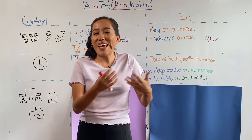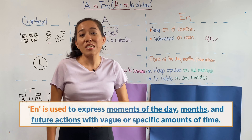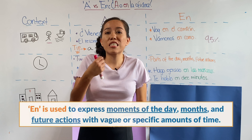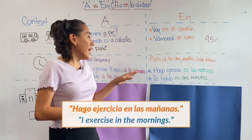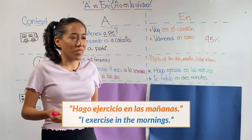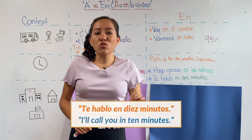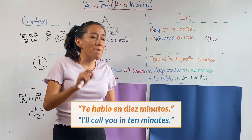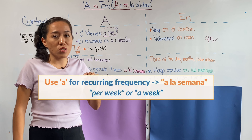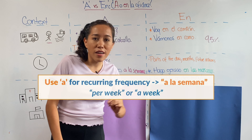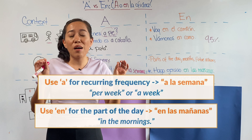However, if you want to use en to talk about time, you have to use parts of the day, months, or express future actions. For example, hago ejercicio en las mañanas — I exercise in the mornings. That's a big lie. Or te hablo en diez minutos — I'm going to call you in ten minutes. Check the difference between expressing frequency — hago ejercicio cuatro veces a la semana — versus saying hago ejercicio en las mañanas. There is a big difference.